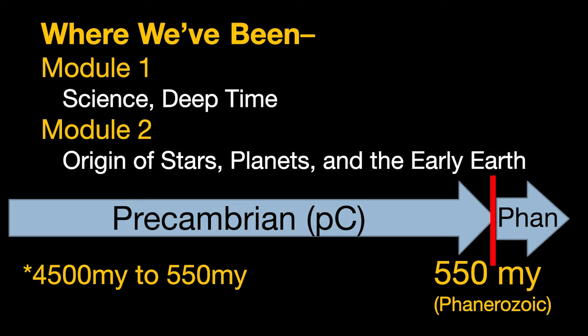Module 2 went back to the beginnings of things like the universe itself, stars and planets, and the very early Earth. We looked at how our planet formed, got its first crust, oceans, and atmosphere — the stage on which life itself emerged. We reviewed some of what we know about the formation of the North American craton and even looked at its crustal age patterns. But although it's nearly 90% of geologic time, we need to work our way out of this lengthy period called the Precambrian.